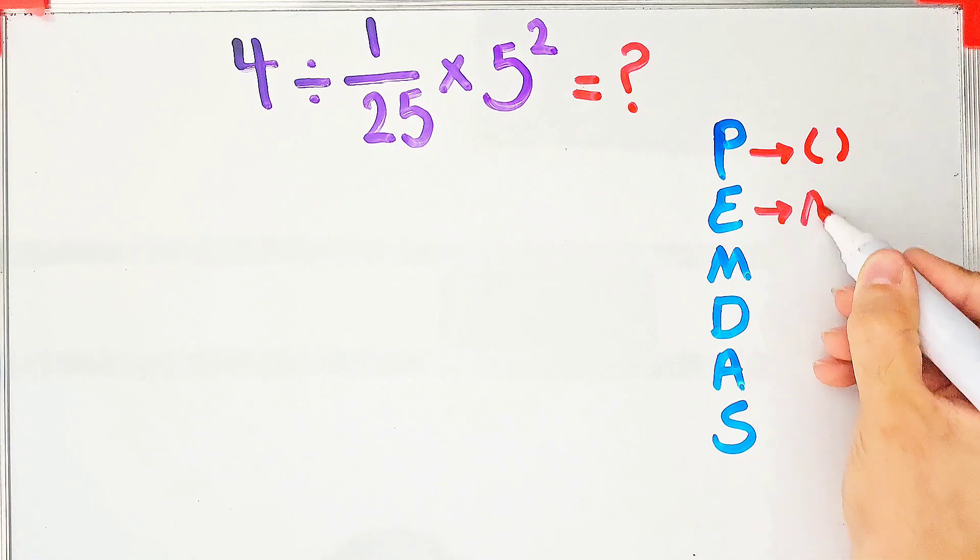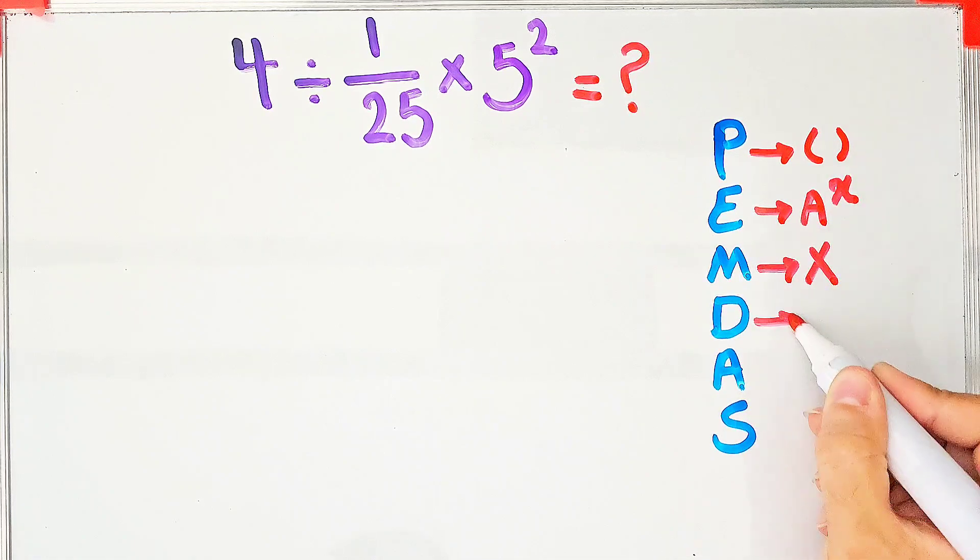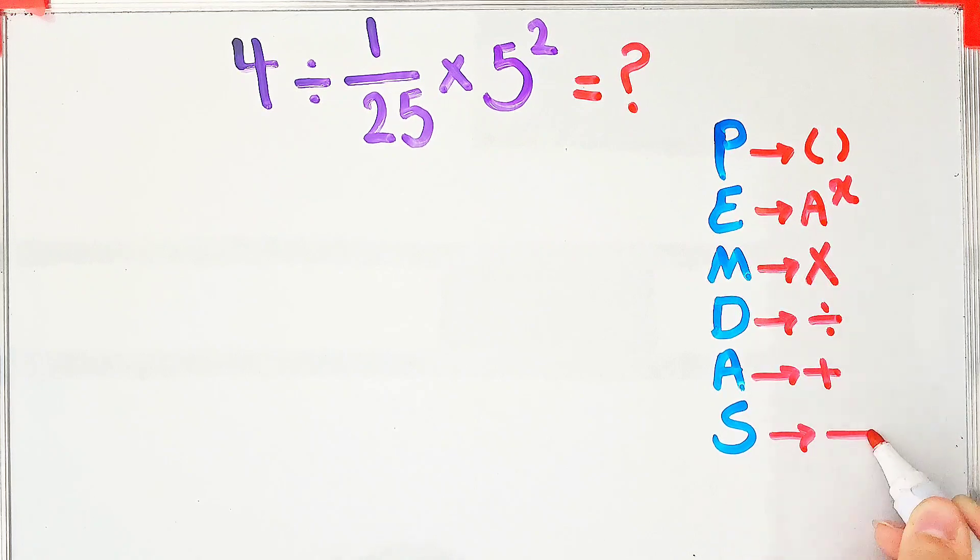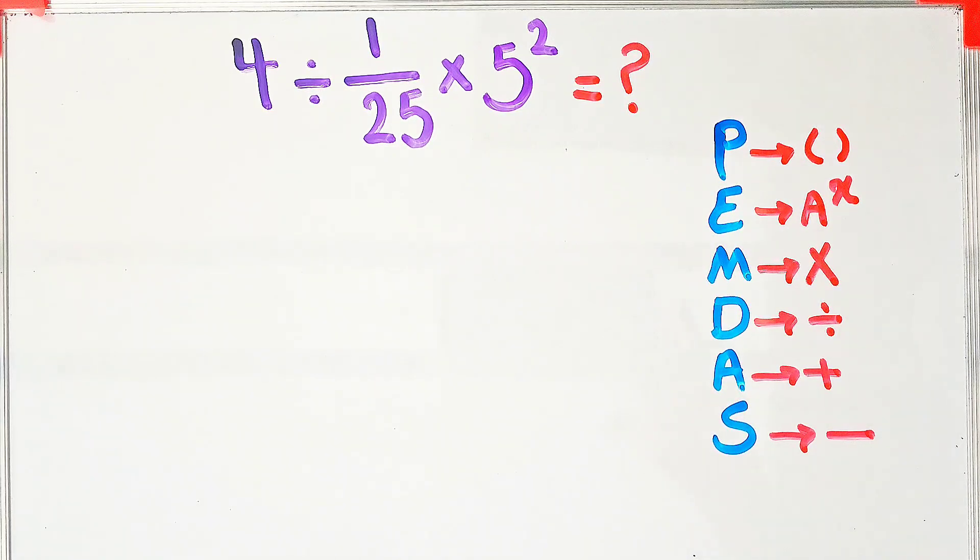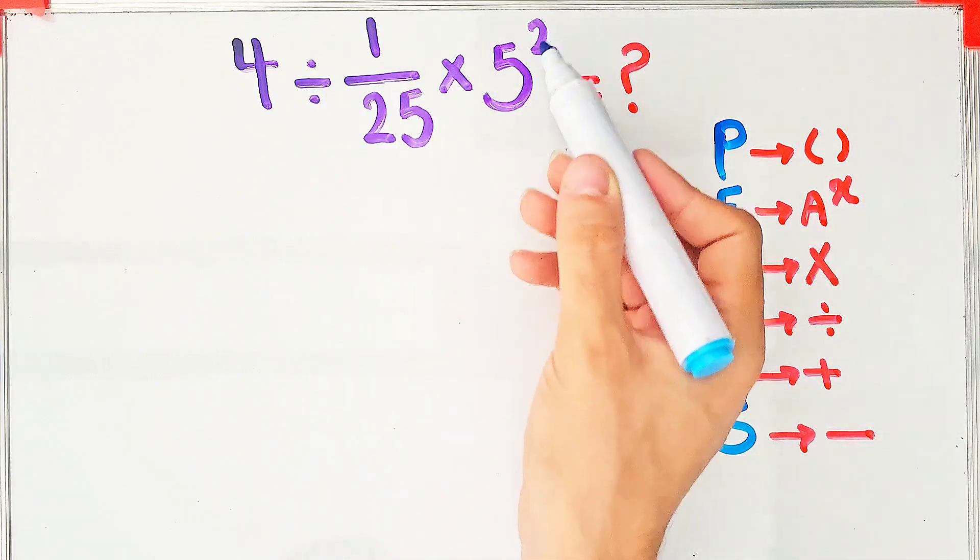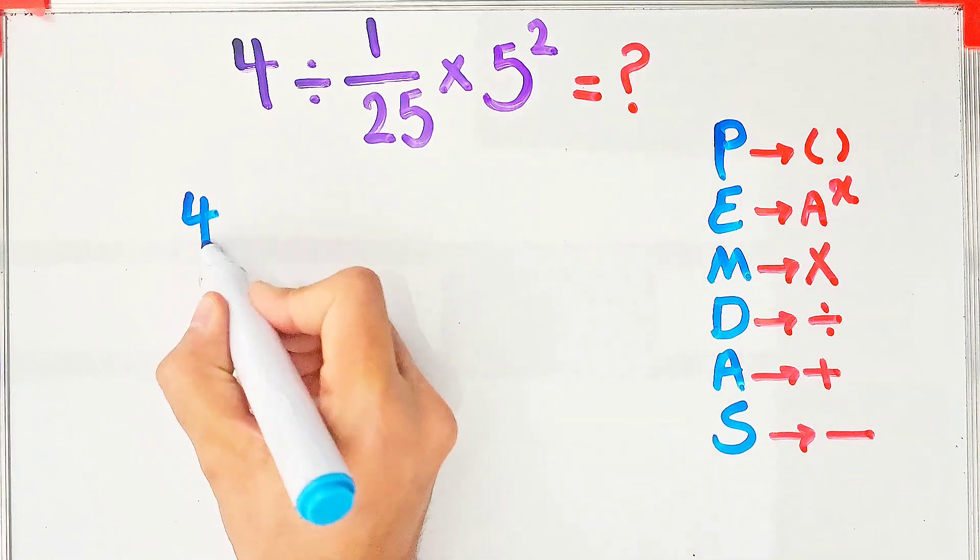In this question, we have division, multiplication, and exponent. According to this rule, first we simplify the exponent: 4 divided by 1 over 25, then times 5 to the power of 2, that equals 25.